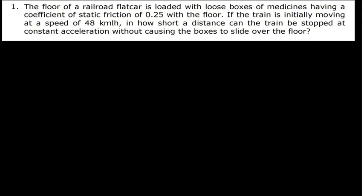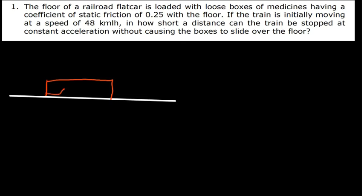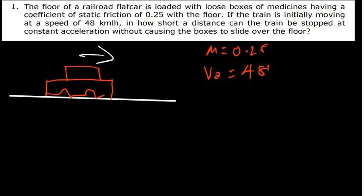It is very important to understand the question. After understanding it, we need to come up with a free body diagram. Let's assume this is the flatcar, moving at constant velocity. We are trying to find the distance. We can see that we have the mu value of 0.25. We also know the initial velocity is 48 kilometers per hour.